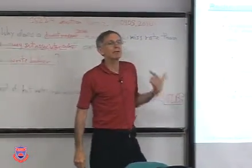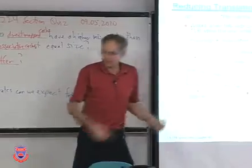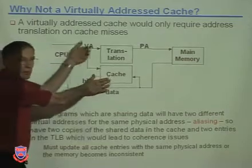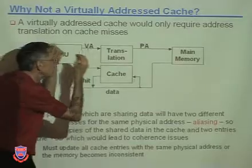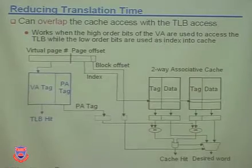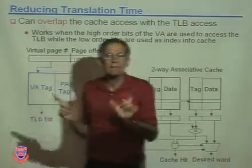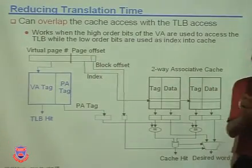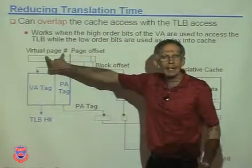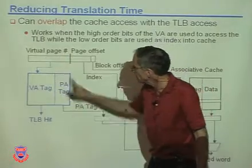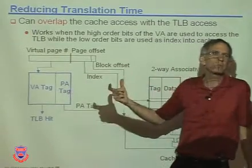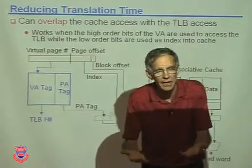Now let's address the issue of doing caching in parallel with translation. If the cache and TLB are designed correctly, the virtual page number goes to the TLB to get a physical address. At the same time, you can send the page offset — which is the index into the cache system — to start the cache lookup in parallel.